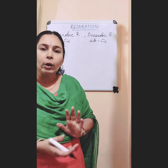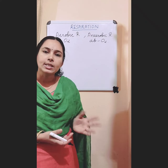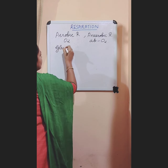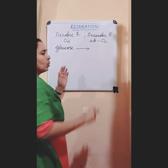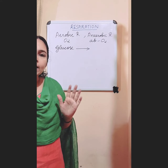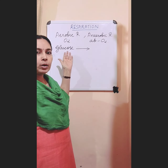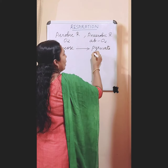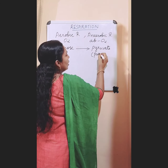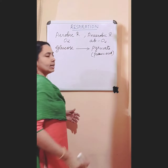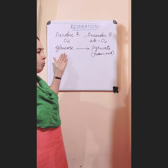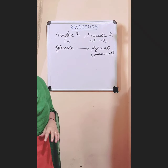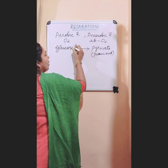The first step is the same for both aerobic and anaerobic respiration. The first step is the breaking down of the 6-carbon compound glucose (C6H12O6) to a 3-carbon compound called pyruvate, also known as pyruvic acid. This process of breaking down of 6-carbon glucose to 3-carbon pyruvate or pyruvic acid is called glycolysis.